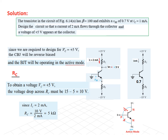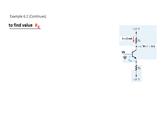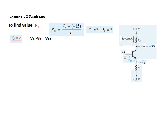Now we need to find RE. We can find RE if we know VBE, using the formula RE = (VE minus VEE) divided by IE. So we primarily need VE and IE. To find VE: from the circuit, VB minus VE equals VBE, so VE equals VB minus VBE. Since VB is grounded (0V), we need to find the new VBE — not 0.7V as before.